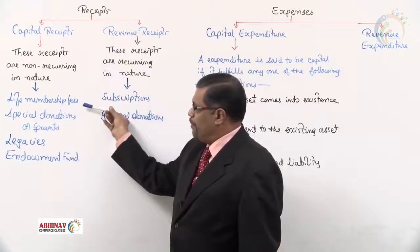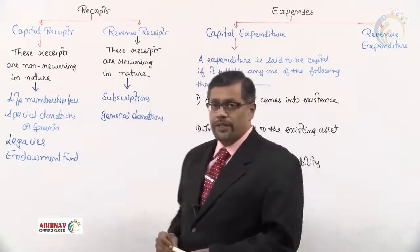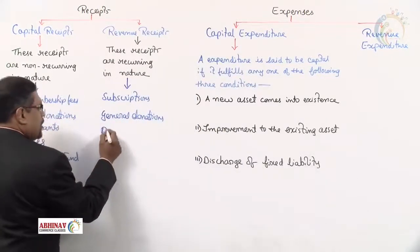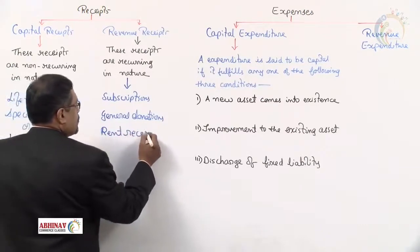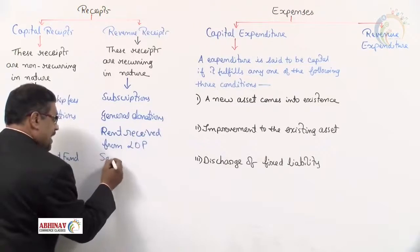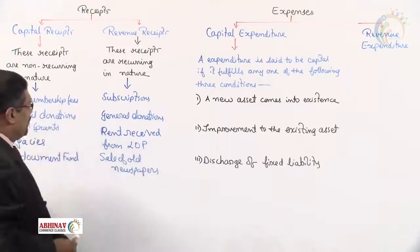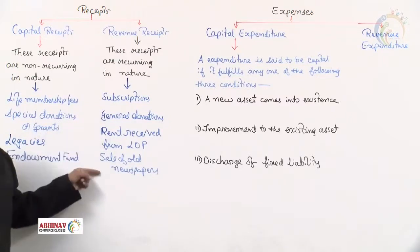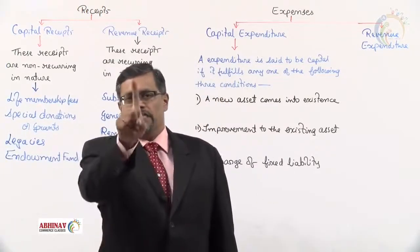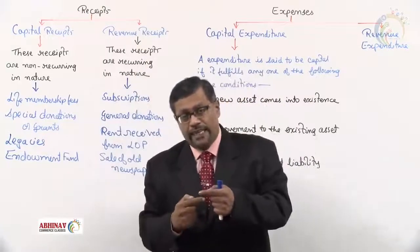So in summary: capital receipts are non-recurring in nature — examples include life membership fees, special donations or grants, legacies, and endowment fund. Revenue receipts are those received again and again — examples include subscriptions, general donations, and rent received from let-out property or sale of old newspapers. In short, capital is received only once; revenue is received again and again.